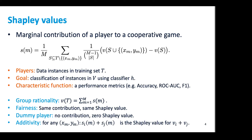Shapley values have many properties we find interesting and valuable for our approach. We have group rationality, meaning the reward is completely distributed among all players. Fairness means two instances with the same contribution will have the same Shapley value. The dummy player property means that if a data instance has no contribution to the performance, it will have zero Shapley value. Most importantly, the additivity property: if a main task is comprised of many subtasks, the contribution of a player to the main task equals the sum of their contributions to the subtasks.